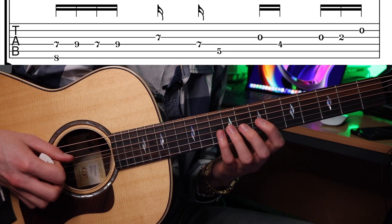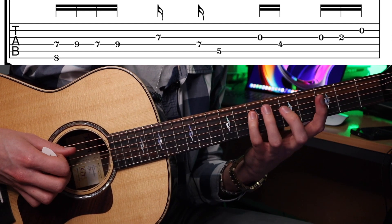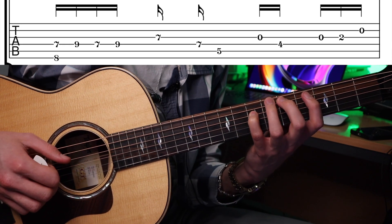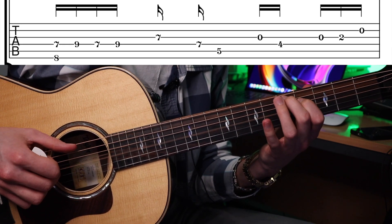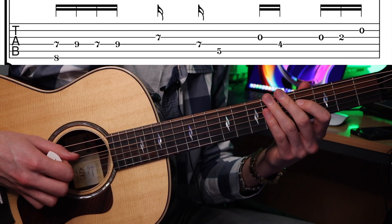Then we have first finger on the seventh of the G and then we slide down to the seventh fret of the D string with our second finger on the fifth fret of the A, open G, then the fourth fret of the D string followed by another backbeat.